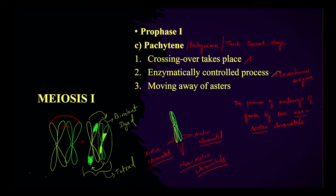Crossing over is an enzymatically controlled process with the help of recombinase, and there will obviously also be the moving of asters to the poles.